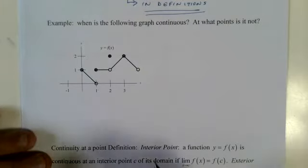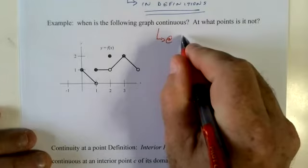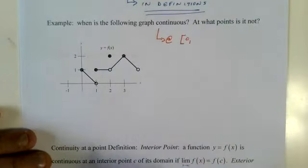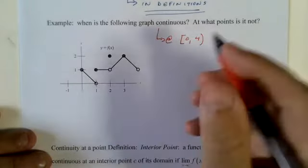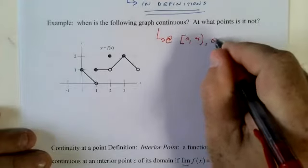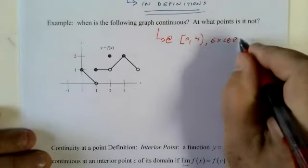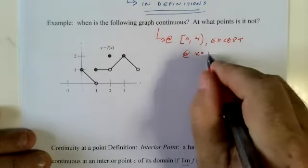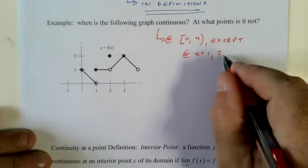So when's the following graph continuous? When is it not? We're going to do that crazy stuff that looks like this from zero to four. And you would say no, it's not, there's a jump. I'm not done. Except at x equals one there's a jump, two there's a hole.